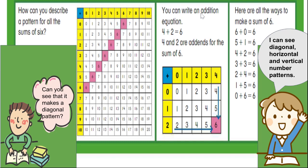Now, you can write an addition equation. 4 plus 2 equals 6. 4 and 2 are addends for the sum of 6. 4 and 2 are addends. They're the numbers being added together. 6 is the sum. It's the answer to an addition equation.